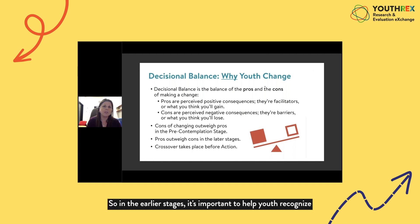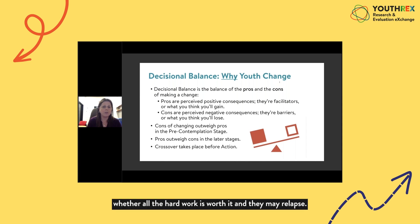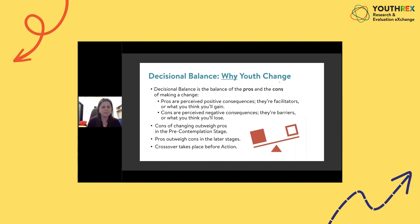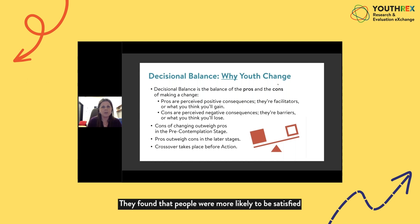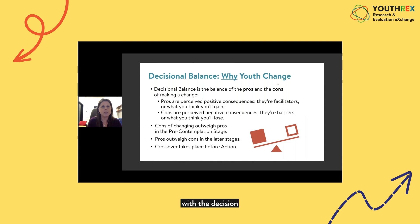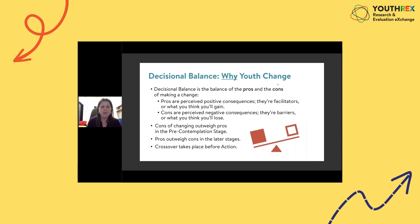The idea around decisional balance was taken from the work of Janis and Mann, who published a book called Decision Making in the late 1970s. They found that people were more likely to be satisfied with a decision if they considered the potential pros and cons of that decision. Miles is then asked to speak to a strategy for increasing the pros and reducing the cons when working with youth.